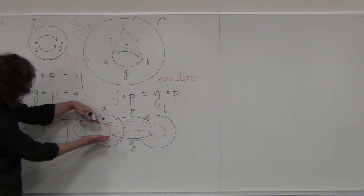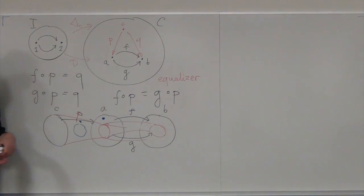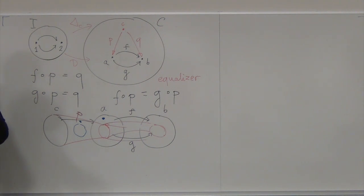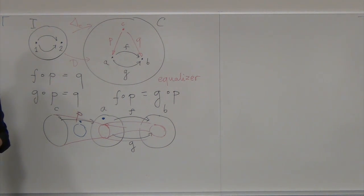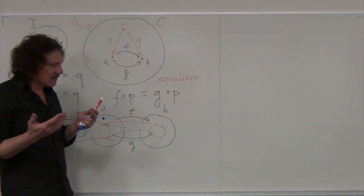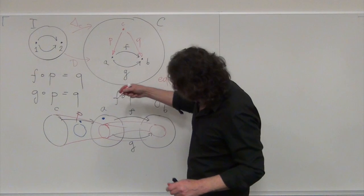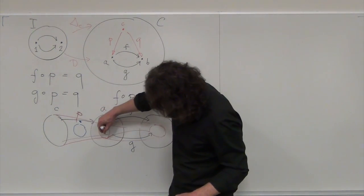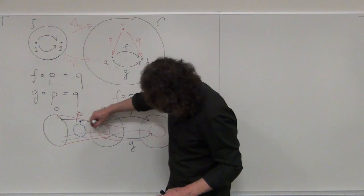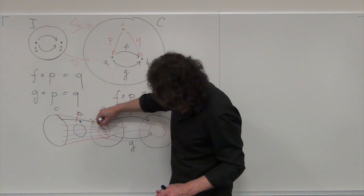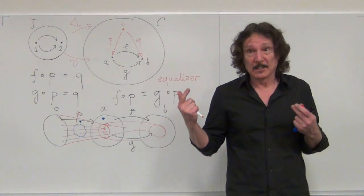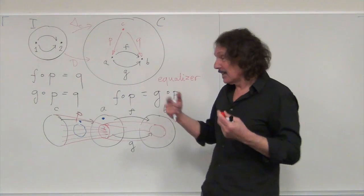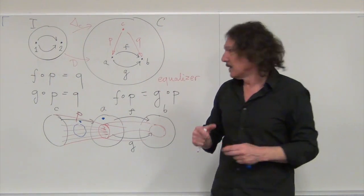Also, when it maps this set C inside A, it better not squish points together — that would be losing information. So it will just map everything in parallel without squishing anything. On sets, that's called an injective function. In category theory, that's a monomorphism.